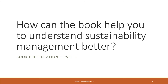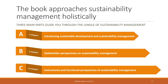How can the book help you understand sustainability management better? The book approaches sustainability management holistically through three main parts. Part A consists of four chapters and is an introduction to sustainable development and sustainability management. Part B has six chapters about stakeholder perspectives on sustainability management. Part C is the longest part — about half of the book, 10 chapters — about instruments and functional perspectives of sustainability management: the how-to for becoming more sustainable.